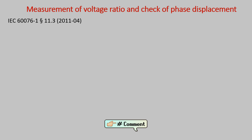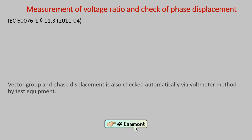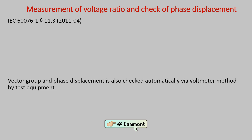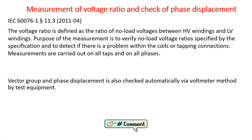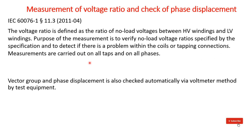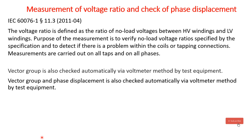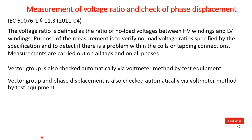As per IEC 676, vector group and phase displacement are also checked automatically via the voltmeter method. Voltage ratio is defined as the ratio of no-load voltage between HV winding and LV winding. The purpose of the measurement is to verify the no-load voltage ratio specified by the specification and to detect any problem with the coils or tapping connections. Measurements are carried out on all taps of all phases, and the vector group is also checked automatically via the voltmeter method using this equipment.